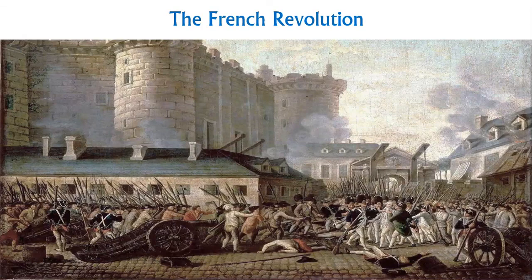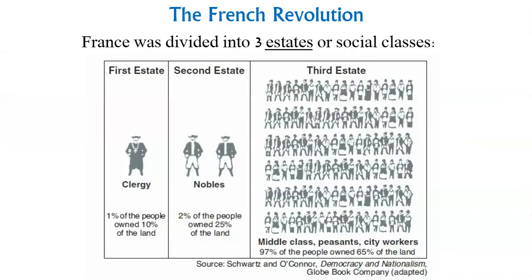France was split into three social classes called estates. The first estate is the clergy — 1% of the population owning 10% of the land. The second estate is the rich nobles — 2% of the population owning 25% of the land. The third estate — the middle class, peasants, and city workers — make up about 97% of the population and own 65% of the land.